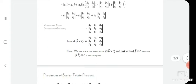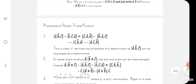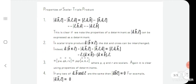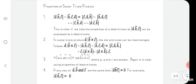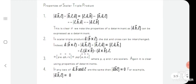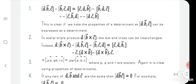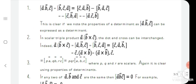Now we will discuss some properties of the scalar triple product. Box(a, b, c) = box(b, c, a) = box(c, a, b).